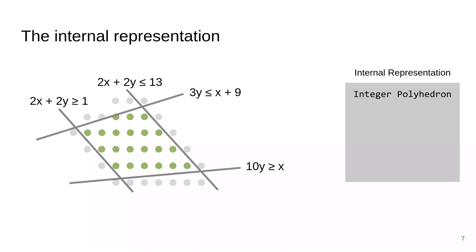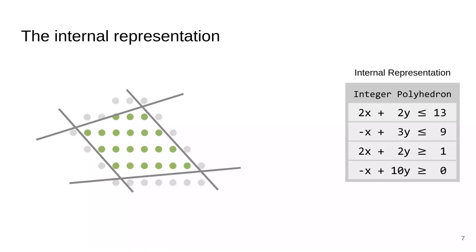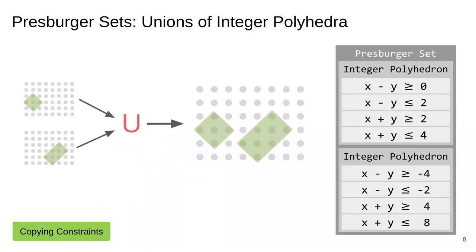The sets are represented internally not as a list of points but as a list of constraints. So an integer polyhedron has a constraint matrix where every row is a constraint and every column is either a variable or the constant term. Similarly, unions of integer polyhedra are represented as a list of polyhedra. In this representation, taking the union of two Pressburger sets essentially involves copying over the constraints from the input sets to the output set. We will see that many operations can be boiled down to copying constraints in this way.